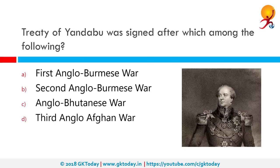The Treaty of Yandabu was signed after which among the following? The Treaty of Yandabu was the peace treaty signed on 24th February 1826 that ended the first Anglo-Burmese war. The treaty was signed by General Sir Archibald Campbell on the British side and the Governor of Lagayin, Mahamin Haug Kwahten, from the Burmese side.